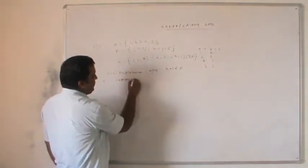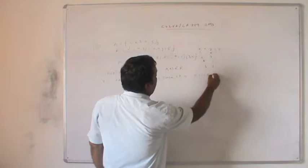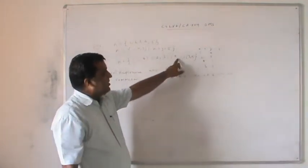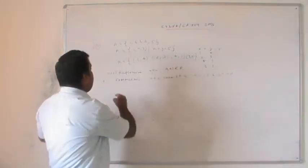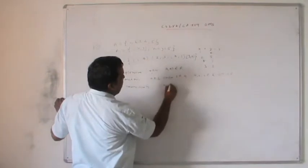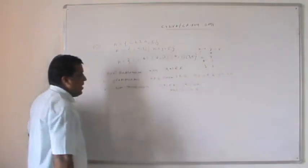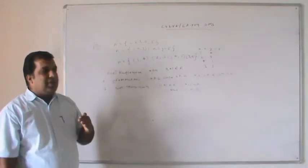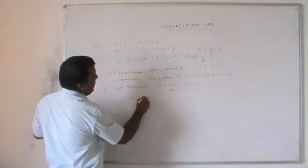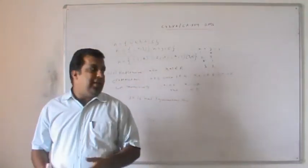Since R is not reflexive and not transitive, it is not an equivalence relation. An equivalence relation requires all three properties — reflexive, symmetric, and transitive — to hold simultaneously. Here, only symmetry holds, so we conclude R is not an equivalence relation.